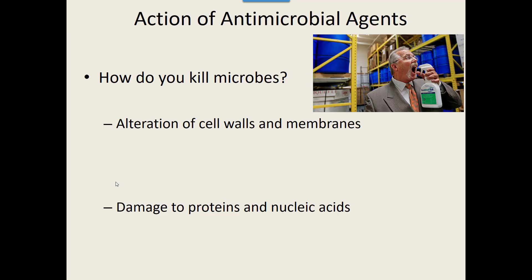When choosing antimicrobial agents, there are a couple of ways they kill organisms. One is that they alter cell walls and membranes. If the cell wall or membrane is changed, they can't do their job — the cell membrane can't control osmosis anymore, meaning water may get out or in that shouldn't, which can destroy the microbe.